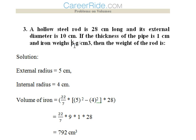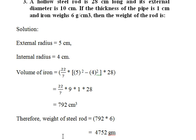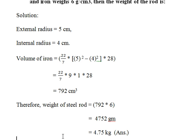Now we know that every 1 cm³ weighs 6 g. So 792 cm would weigh 792 into 6, 4752 g. That is 4.75 kg. That would be the answer.